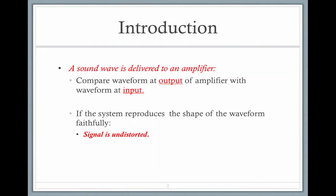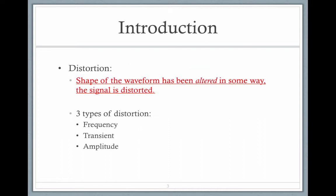If a sound wave is delivered to an amplifier, we can compare the output to the input, and if it is perfectly reproduced, it is undistorted. Distortion is when the shape of the waveform is altered in some way and the signal is distorted.